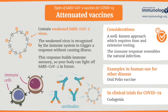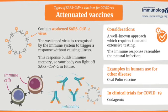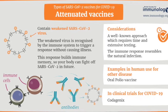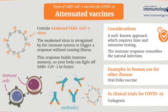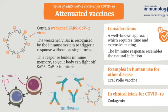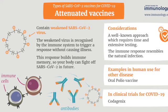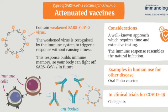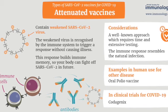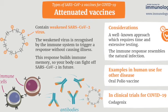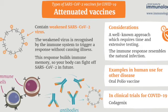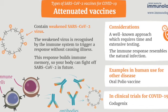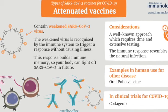Live attenuated vaccines use a weakened or attenuated form of the germ that causes a disease. Because these vaccines are so similar to the natural infection that they help prevent, they create a strong and long-lasting immune response. Just one or two doses of most live vaccines can give you a lifetime of protection against the germ and the disease it causes.